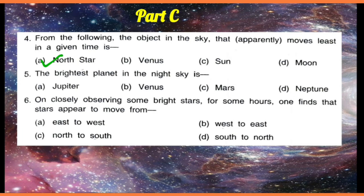Number five: the brightest planet in the night sky — that is Venus. On closely observing some bright stars, one finds that a star appears to move from east to west, west to east, north to south, or south to north. It is option A — east to west.